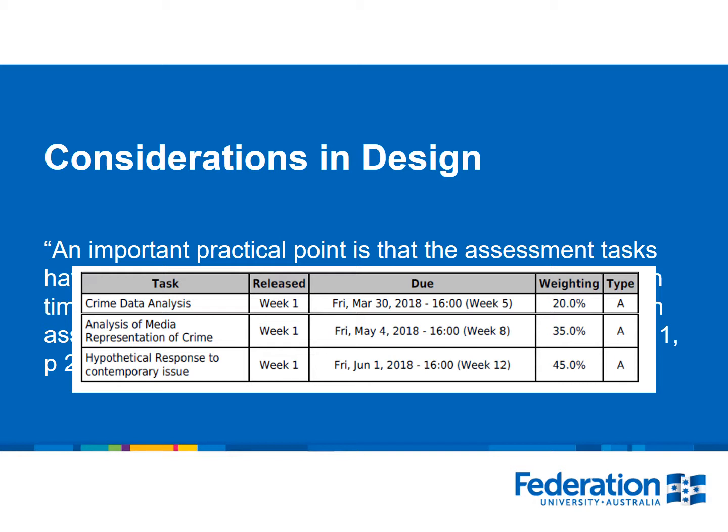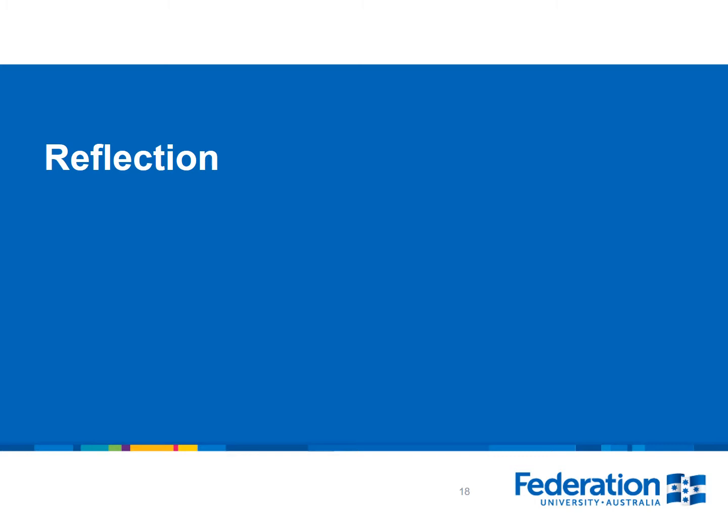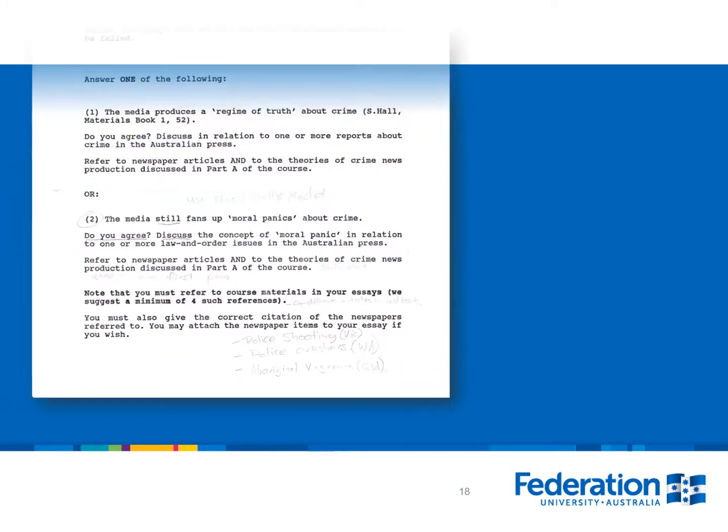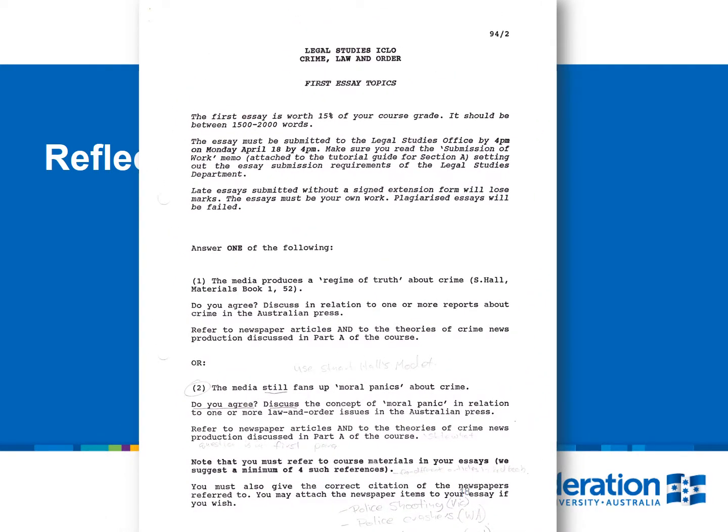Perhaps the three assessment tasks in this structure weren't as manageable as they seemed, and this was complicated by the fact that we also had staffing shortages where I had to mark another class due to illness. To conclude, I'll reflect on an assignment I had to do as part of my first year legal studies subject which covered the same material as Crime in Contemporary Contexts. This assignment was an essay reflecting on the media coverage of crime — very much the same learning outcomes as assessment task 2 in Crime in Contemporary Contexts.